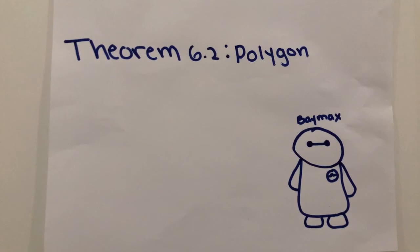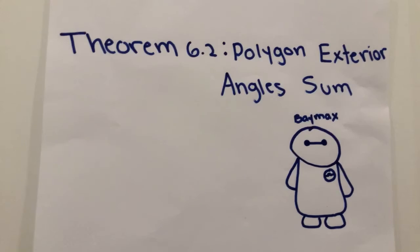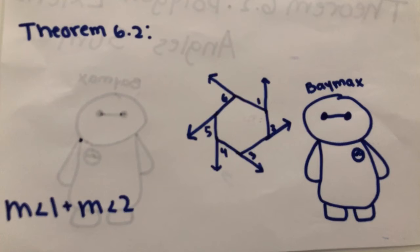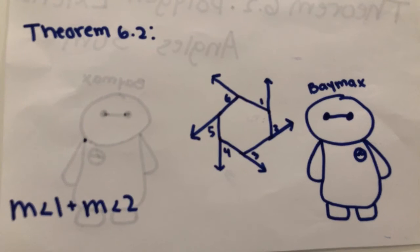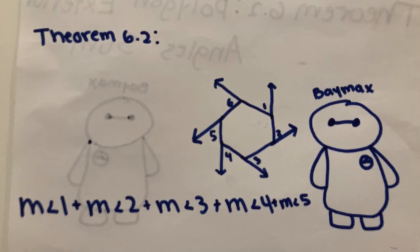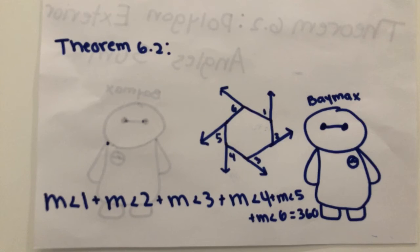Now let's move on to Theorem 6.2, polygon exterior angle sum. This states that the sum of the exterior angle measures of a convex polygon, one angle at each vertex, is 360. In this figure, measurement 1 plus measurement 2 plus measurement 3 plus measurement 4 plus measurement 5 plus measurement 6 all equal 360.